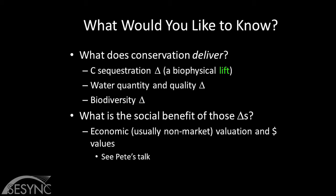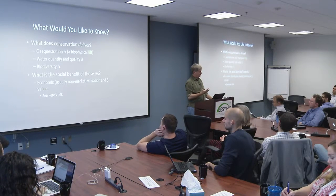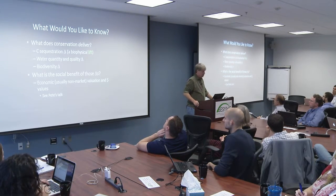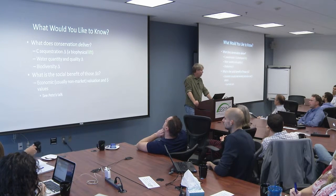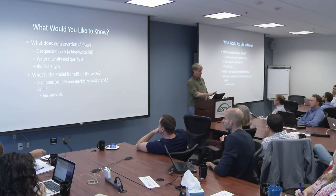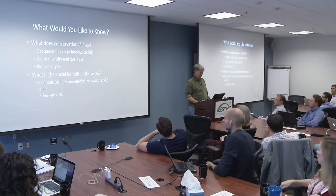What else do we want to know? What does conservation actually get you? If I protect this forest, I need to map that forest cover into some sequestration function. These are described as deltas—the marginal impact of this protection relative to the alternative on these outcomes. We need some measure of the biophysical lift: how much carbon is this going to sequester relative to if we didn't protect? How much more water quantity? How much more biodiversity? Then we can get at the social benefit of those deltas. This is a big part of the challenge—doing those biophysical mappings and figuring out those ecological production functions.